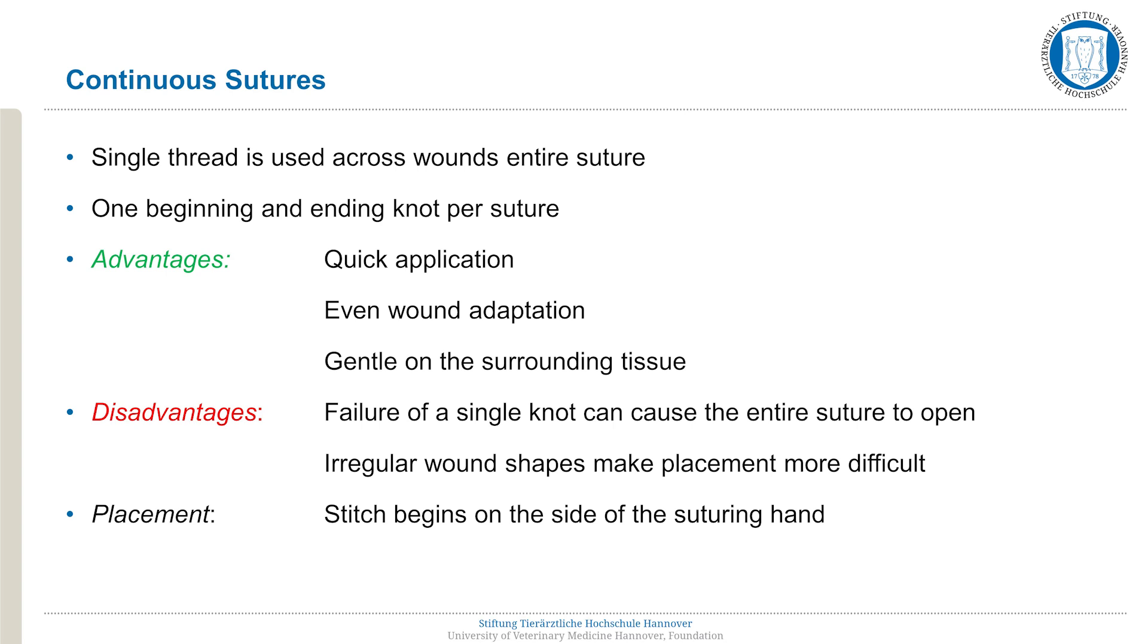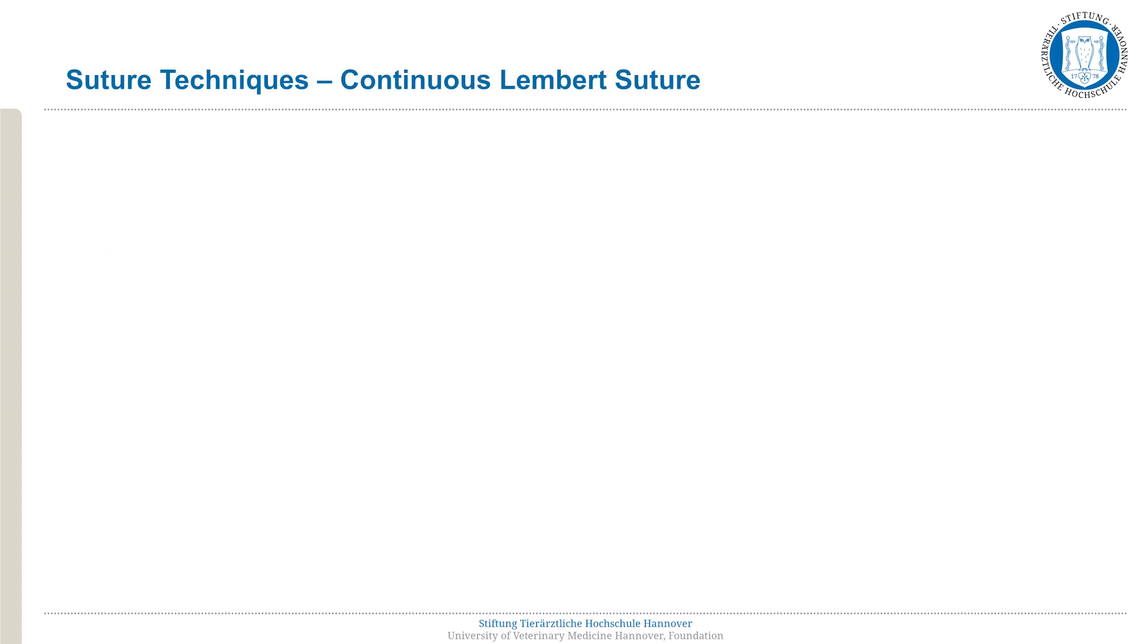When placing continuous sutures, the stitch should begin on the side of the suturing hand. The Lembert suture is suitable, in conjunction with another suture, for the closure of hollow viscera, such as the uterus, bladder, intestine, or crop.